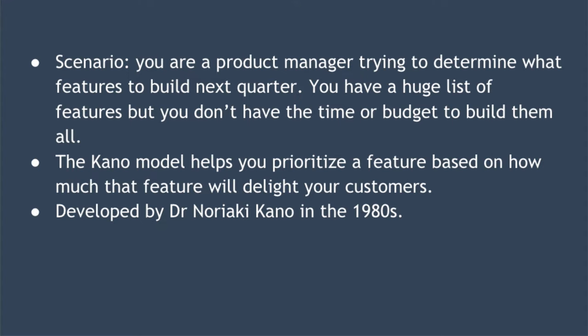One option might be to get your team together to brainstorm ideas. Another might be to survey what's important to your customers. These two approaches will generate lots of options and ideas, but not all customers are equal and many customers may not even be able to articulate or know what they want. So the big question for you as a product manager is how do you decipher all of this into something you can use? Well, this is where the Kano model comes in. It helps you prioritize a feature based on how much that feature will delight your customers, putting your customers front and center to give your product the best chance of being successful in the market.